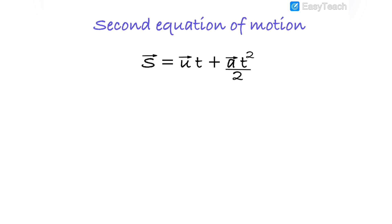The second equation of motion is s = ut + ½at², where u is the initial velocity, a is the acceleration, and s is the total displacement traveled in time t. Note that s is displacement, not distance — it can be negative or positive.